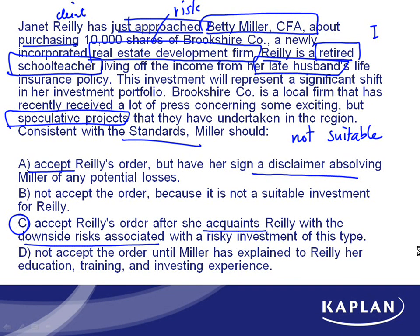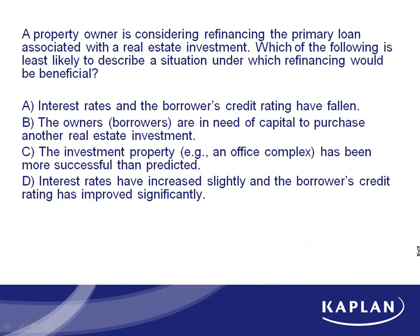Answer B is not acceptable because the client approached us — it's incorrect to refuse the order outright. Answer D says don't accept the order but explain her training and investment experience, which doesn't make much sense. Many people who thought 'this is unsuitable' would tick B and get the wrong answer. But since the client approached us, you then have to decide which response is the better one — and C is clearly the better reason. Many times these questions aren't direct; it's about comparing which answer is more appropriate.